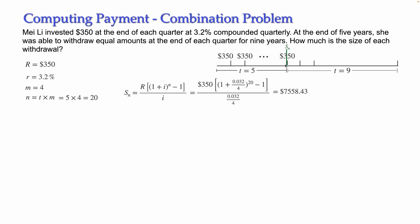This future value of $7,558.43 will become the present value in the second annuity. For finding the payments in the next nine years — which is the actual question — we use this amount as the present value. The interest in this period could be different, but in this case it remains the same.